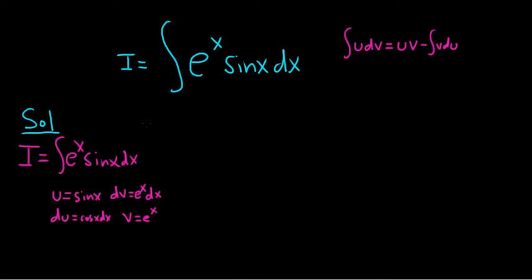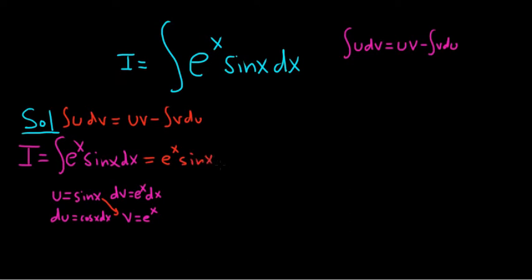Now we'll use the parts formula: the integral of u dv equals uv minus the integral of v du. So uv is e to the x sine x, minus the integral of v du, which gives minus e to the x cosine x dx.